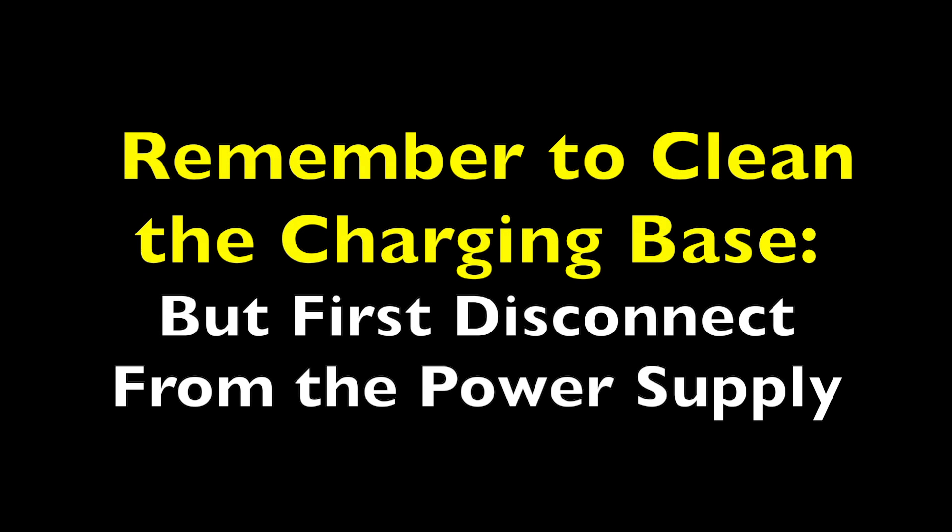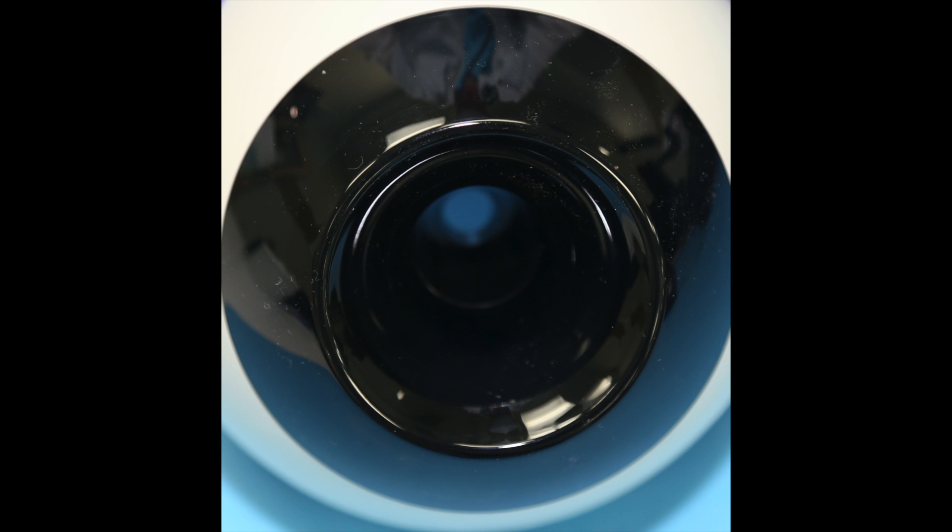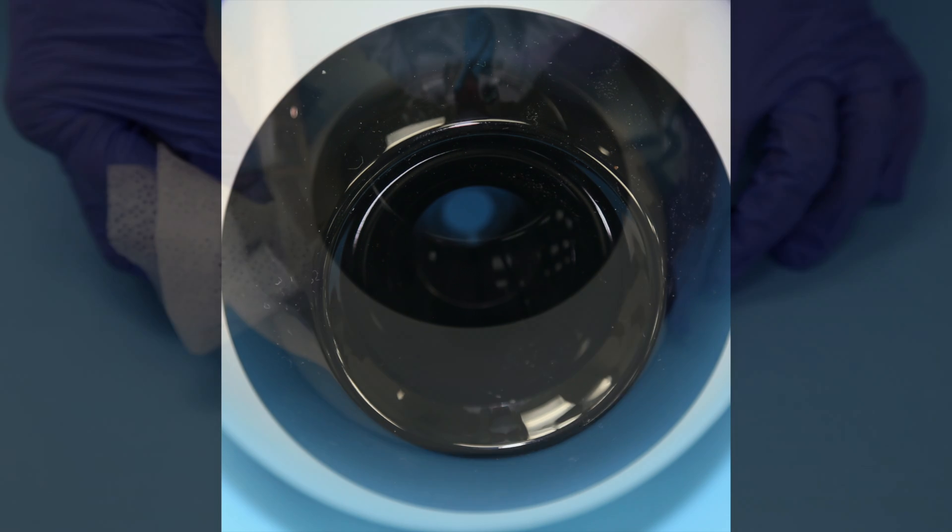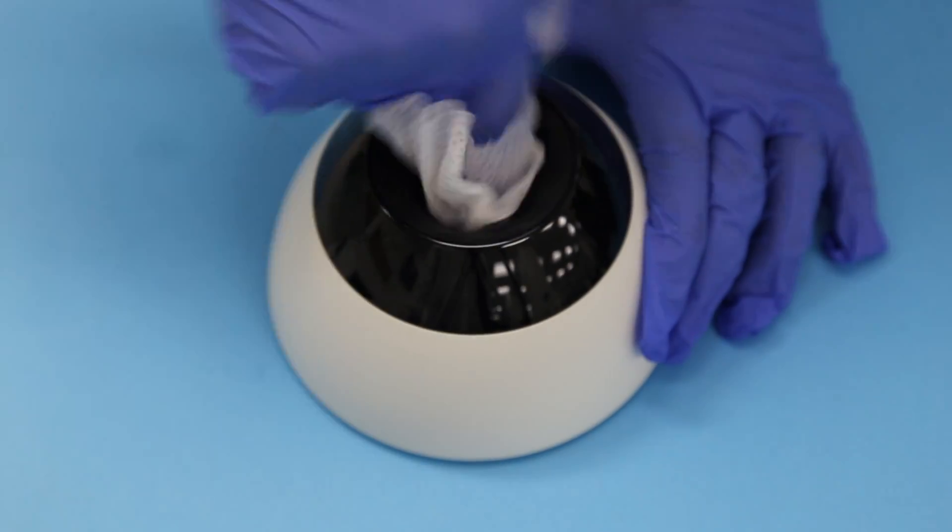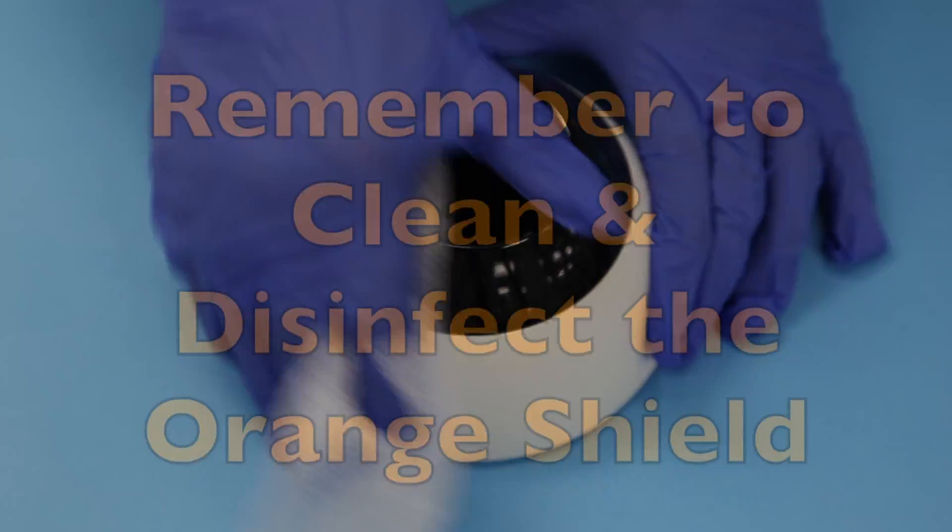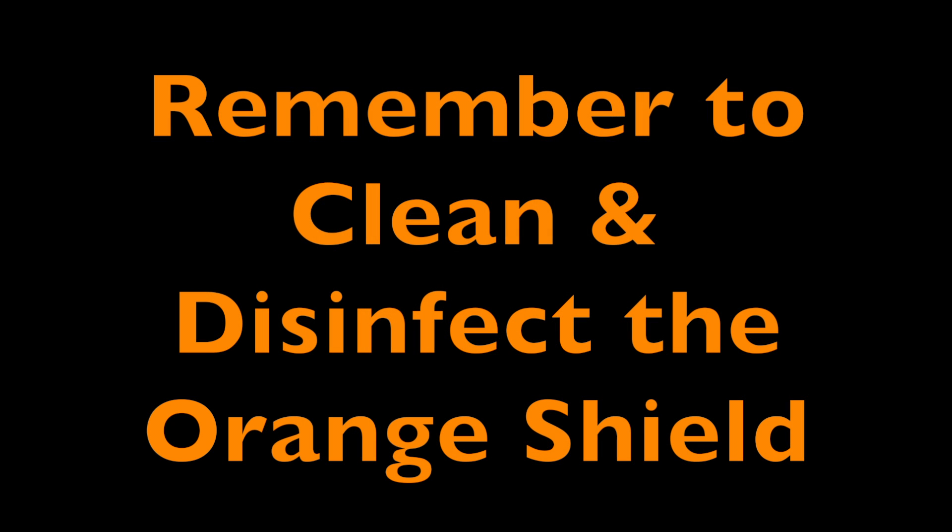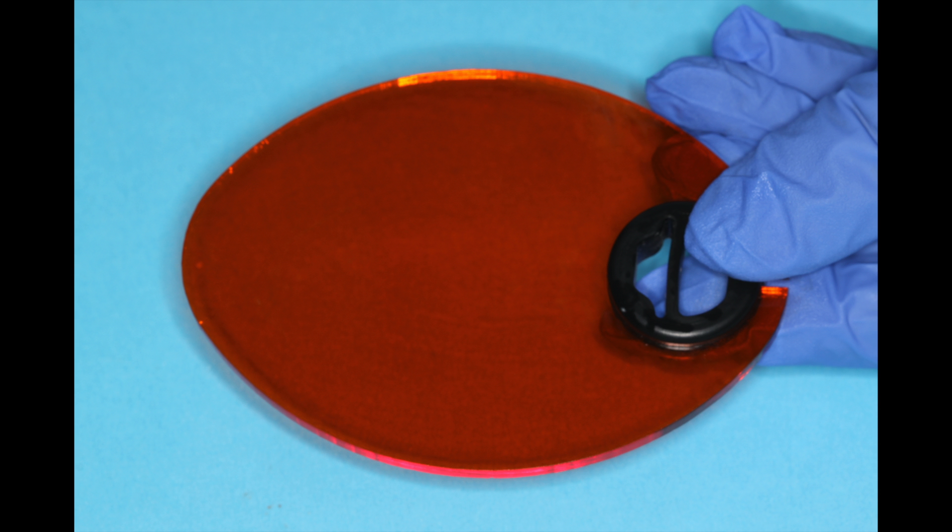Remember also to clean the charging base. In this particular light, there are no charging contacts to worry about. So we can go in, use a wipe and disinfect and clean the entire base. You can clean the orange shield with CaviWipes as well if you wish, so there's no debris left on those.